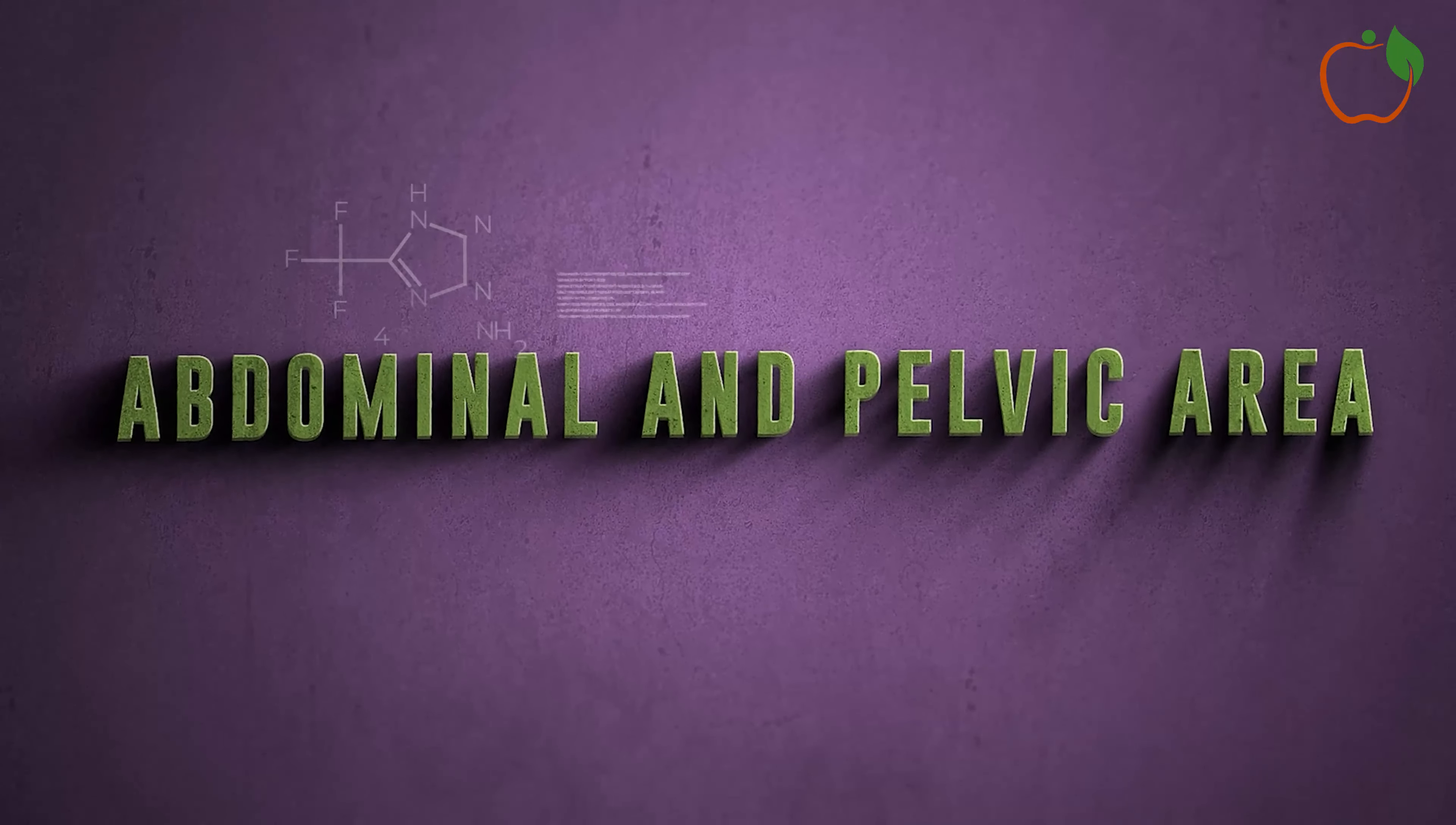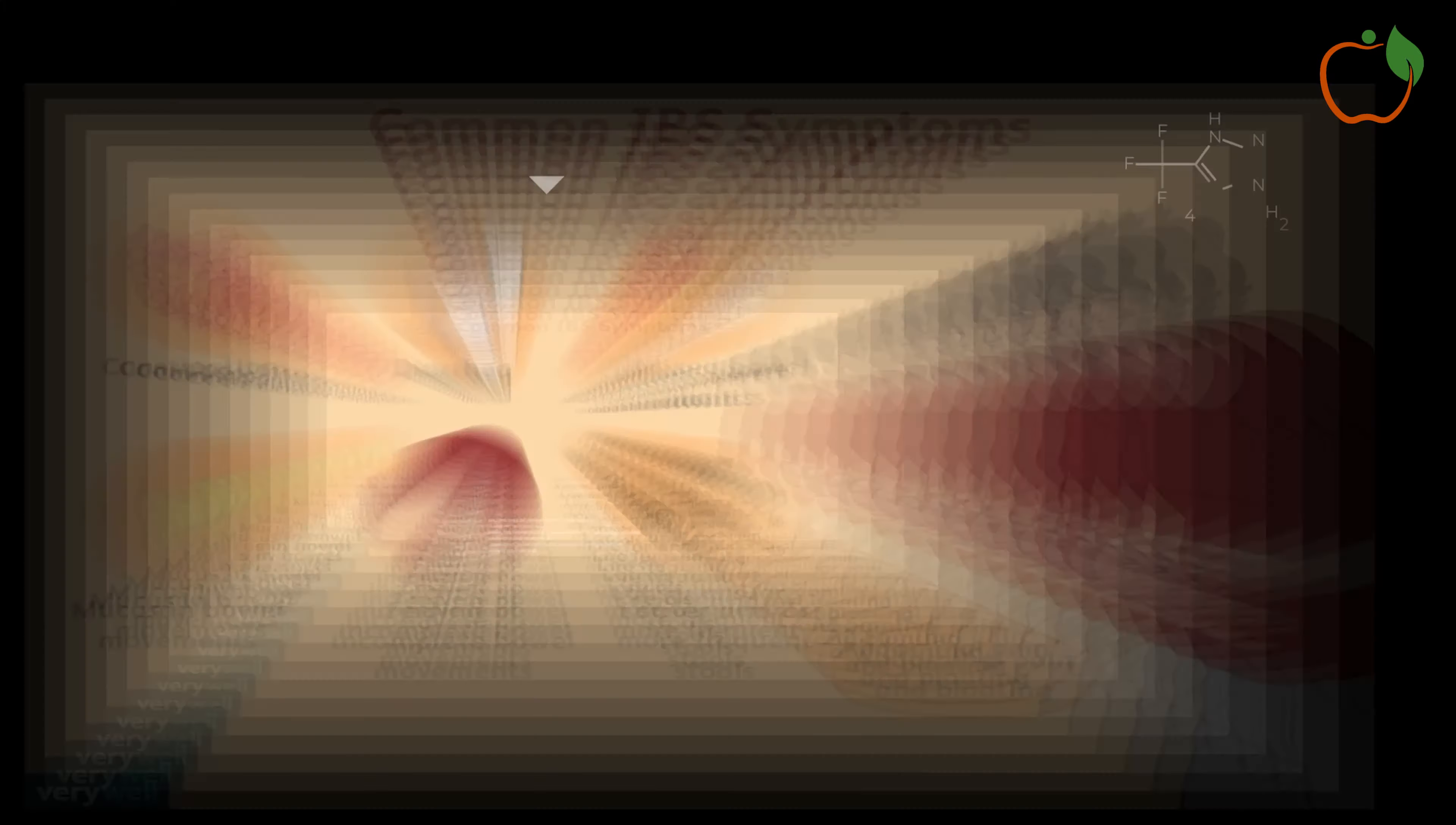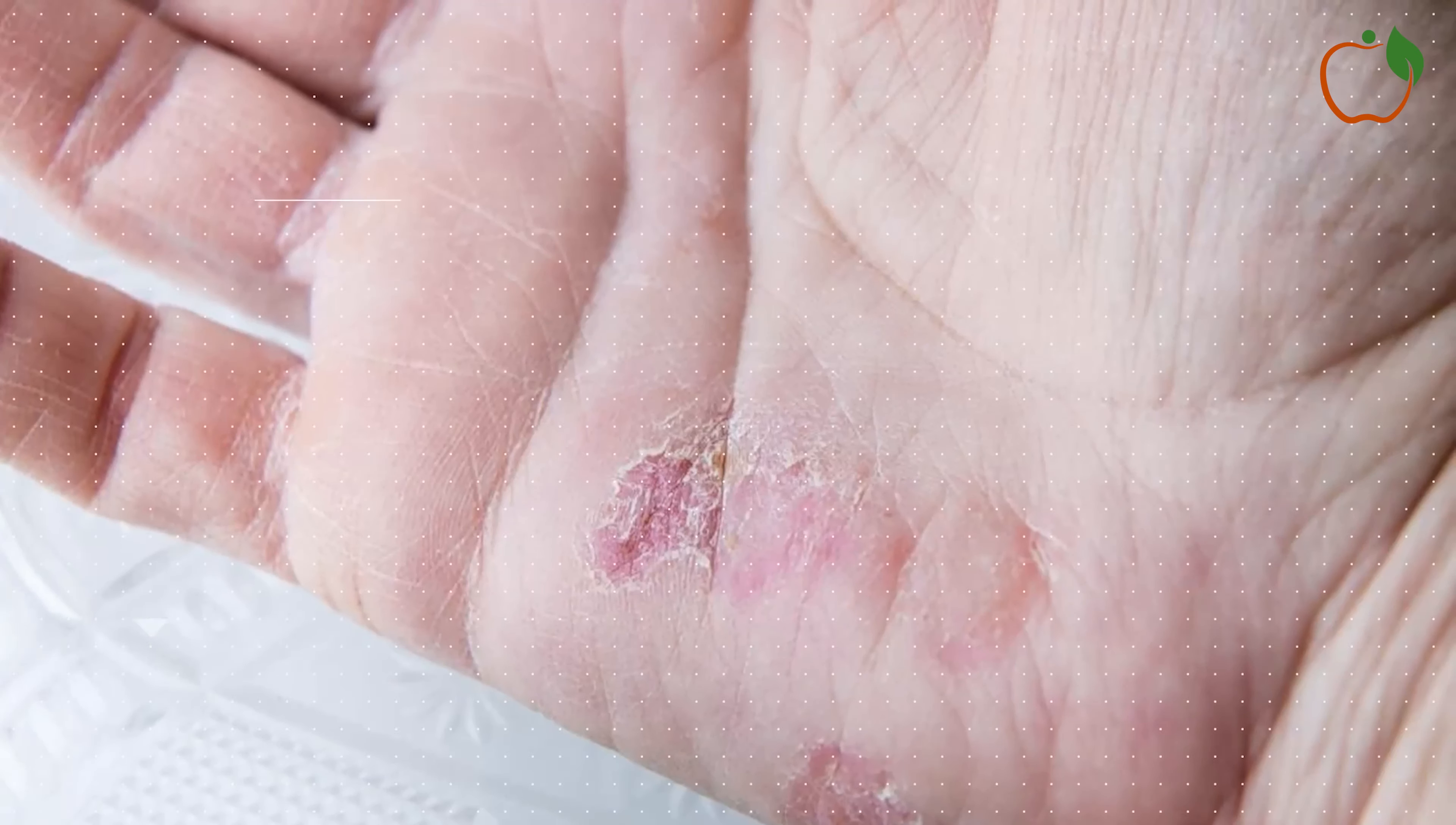Abdominal and pelvic area: nausea, vomiting, diarrhea, urinary problems like burning sensation or increased frequency, bowel irritation like diarrhea, cramping, rectal bleeding, fatigue, skin irritation, rashes, blistering, peeling.